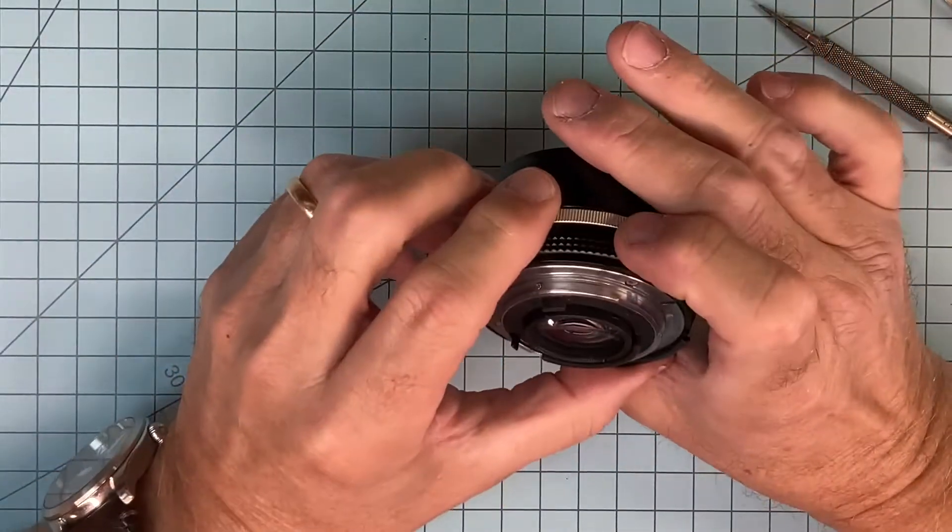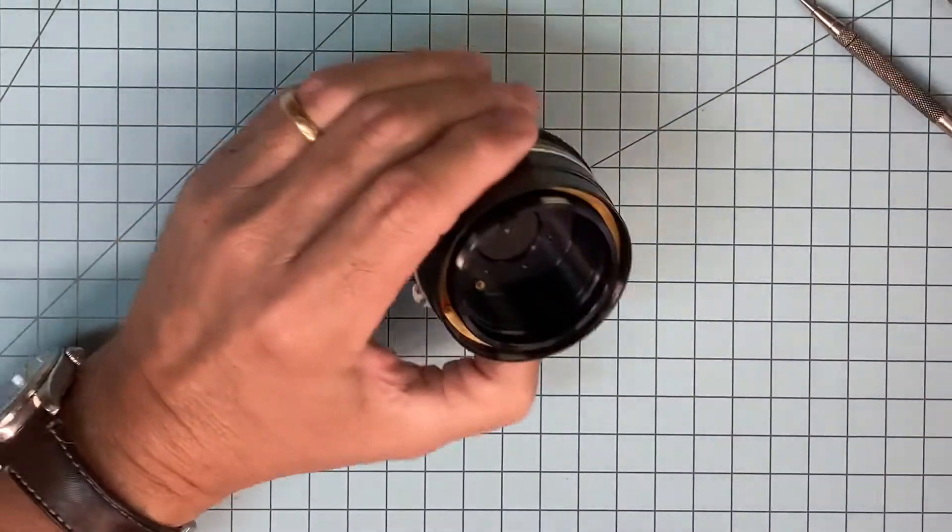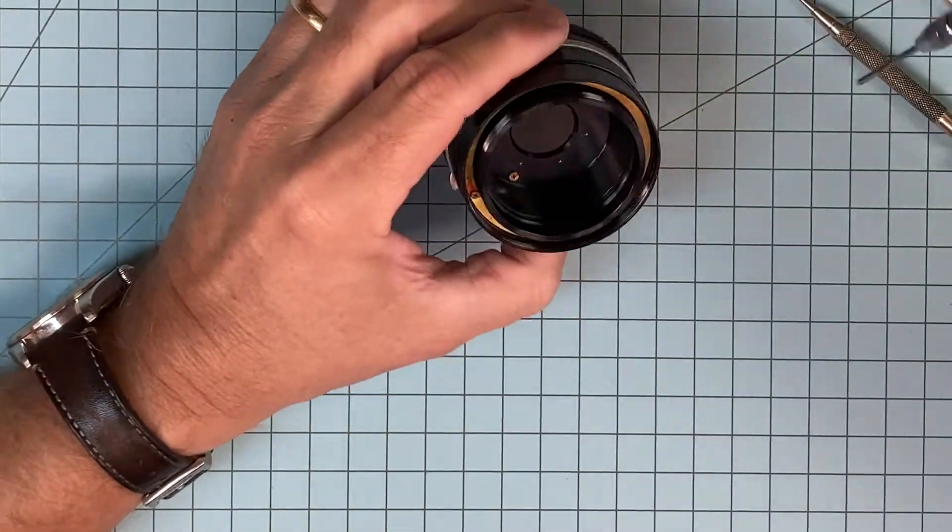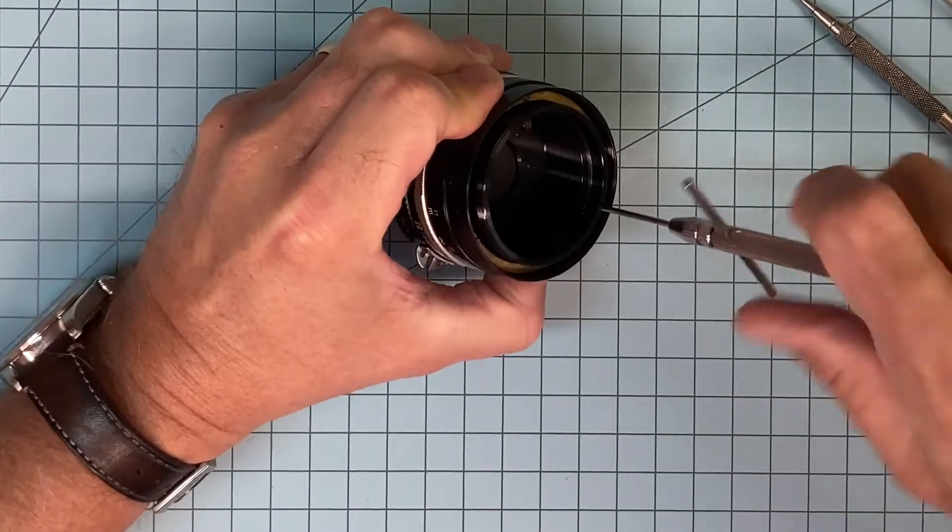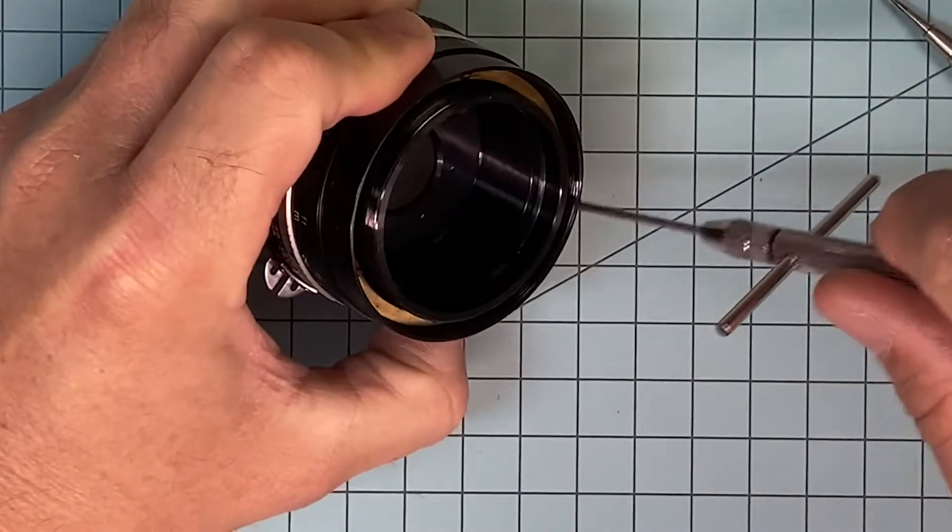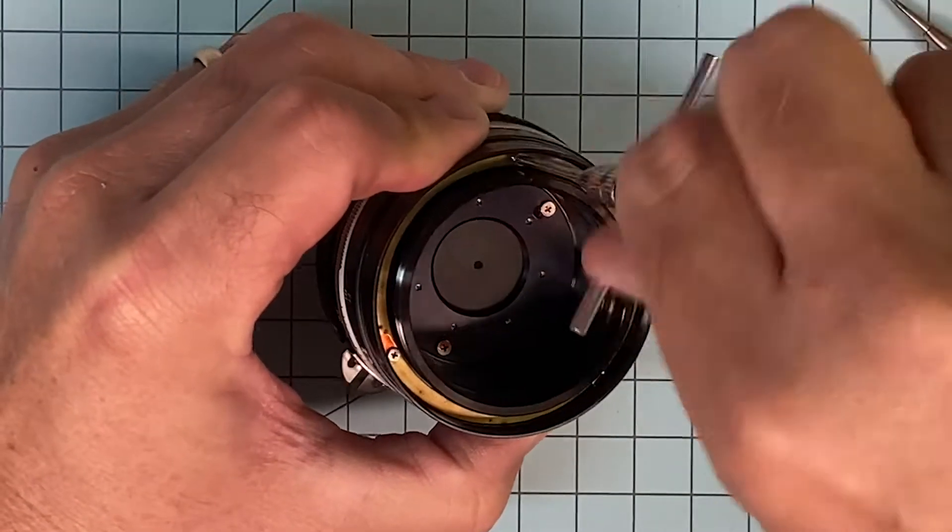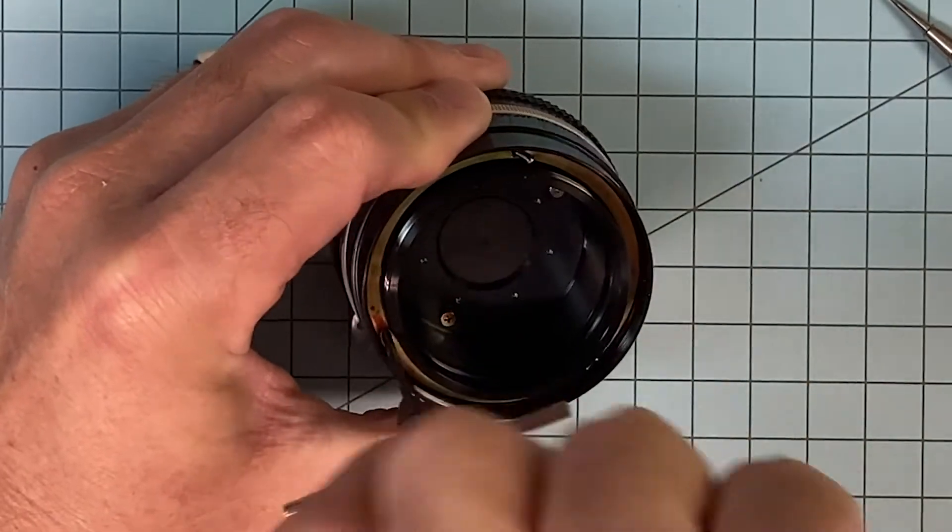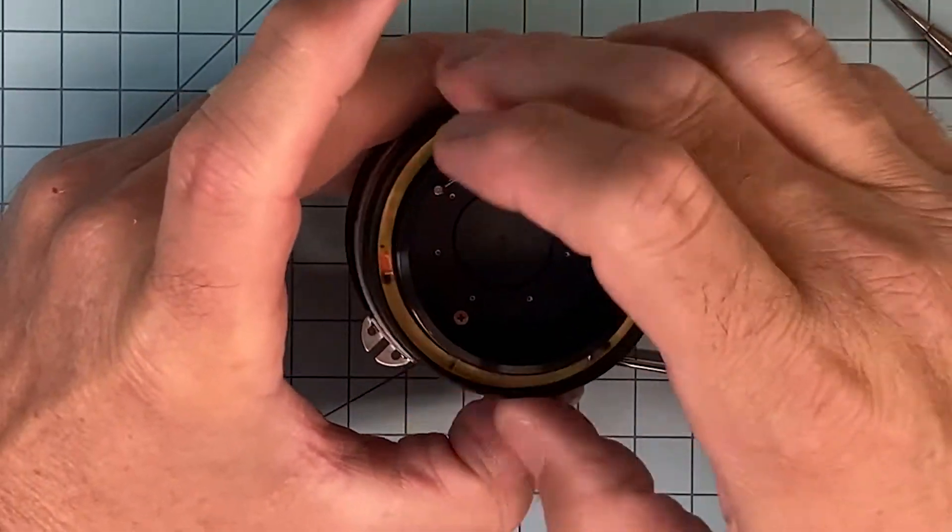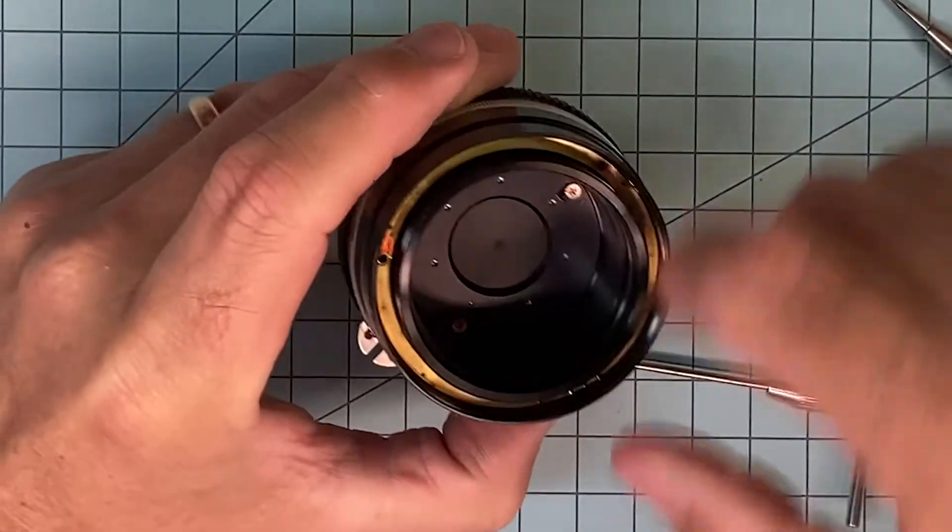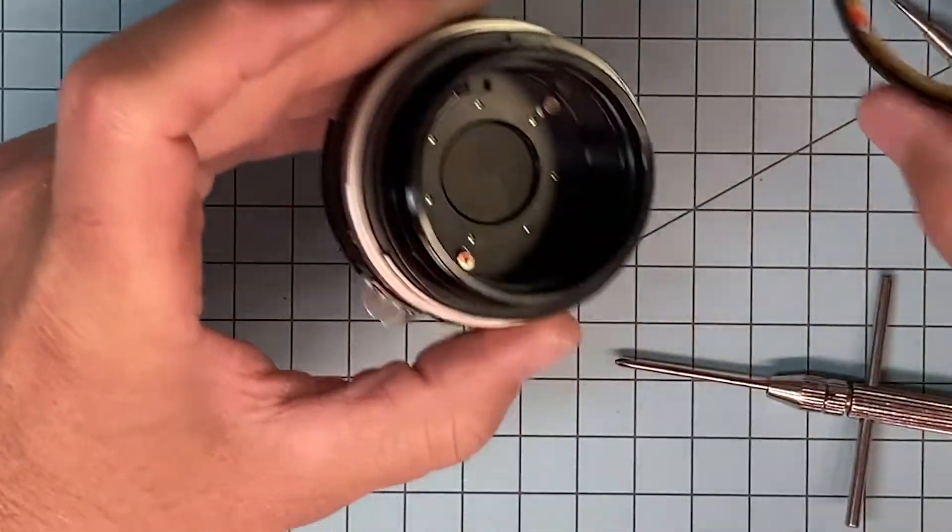I'll take the rear cap off. We can take the focus ring off. Many lenses come apart in different ways, but this one's fairly simple. Just take out the three screws. These are slip rings.